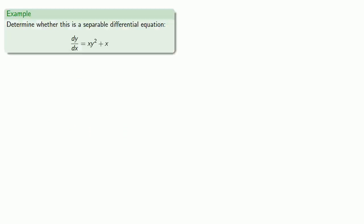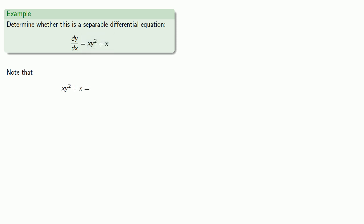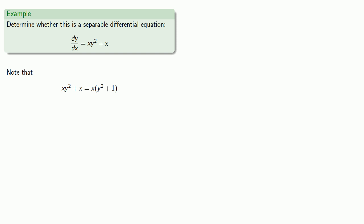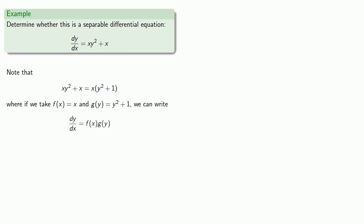For example, let's take a look at this and determine whether it's a separable differential equation. We have dy over dx equals something, and our something can be factored. If we take f(x) = x and g(y) = y² + 1, we can write our differential equation in the form function of x times function of y. And so this is a separable differential equation.